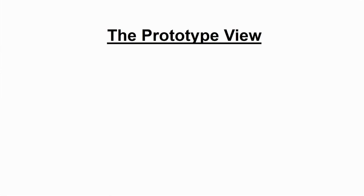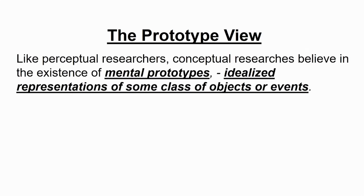To circumvent the problems of the classical view, another model was proposed: the prototype view or prototype model of categorization. Like perceptual researchers, conceptual researchers also believe in the idea of mental prototypes — remember from the perception lecture where we dealt with prototype theory as one of the bottom-up theories, looking at how prototypes are formed. In categorization also, conceptual researchers think about mental prototypes.